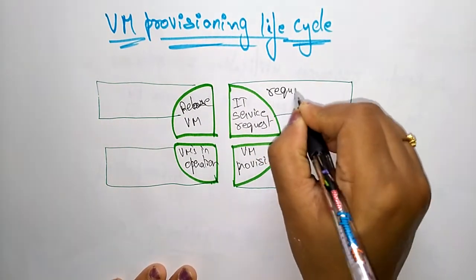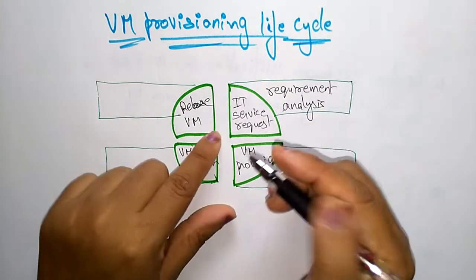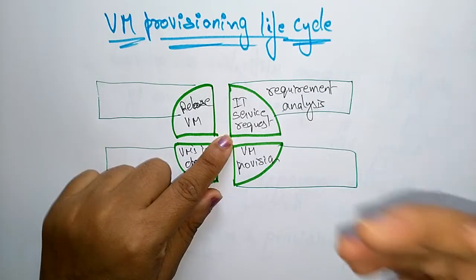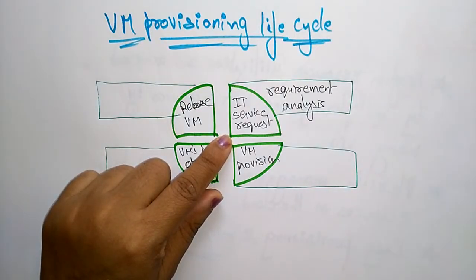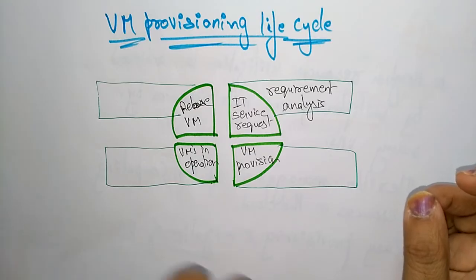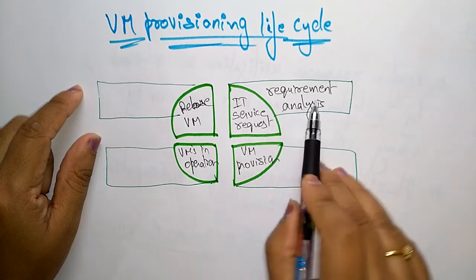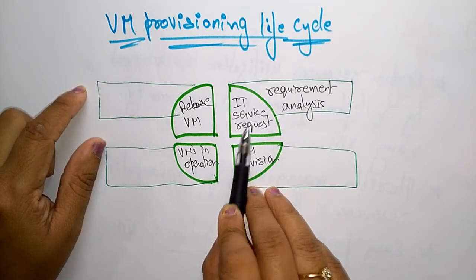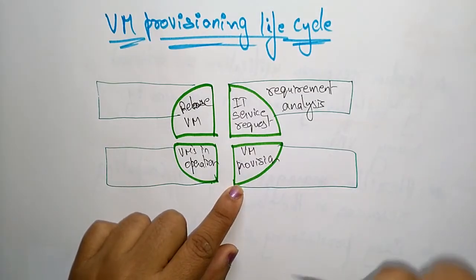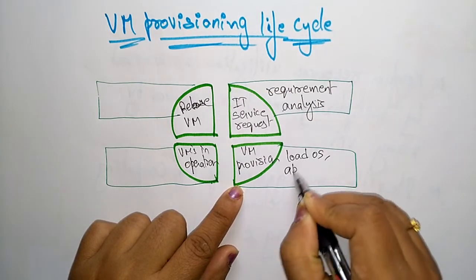Starting with requirement analysis: at this stage, the IT service request is made, where they decide the configurations — what type of systems they want, what type of hardware they want, and what type of applications they want. So the IT service request is done at the requirement analysis stage. Next, virtual machine provision: after deciding, they allocate the virtual machine — loading operating systems, applications, and configurations.